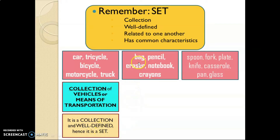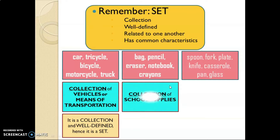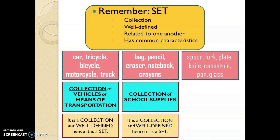We have another group of things: bag, pencil, eraser, notebook, and crayons. What collection of things are these? It is a collection of school supplies. Since we have identified the common characteristics — they are all related to things used in school — this collection of objects is therefore a set.